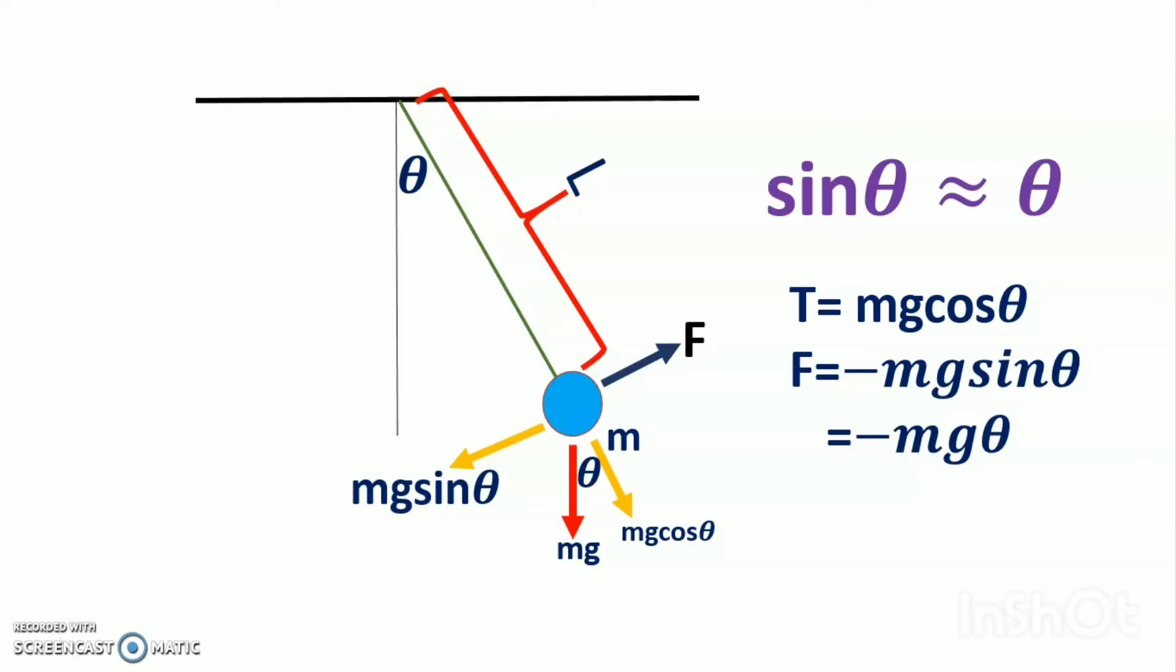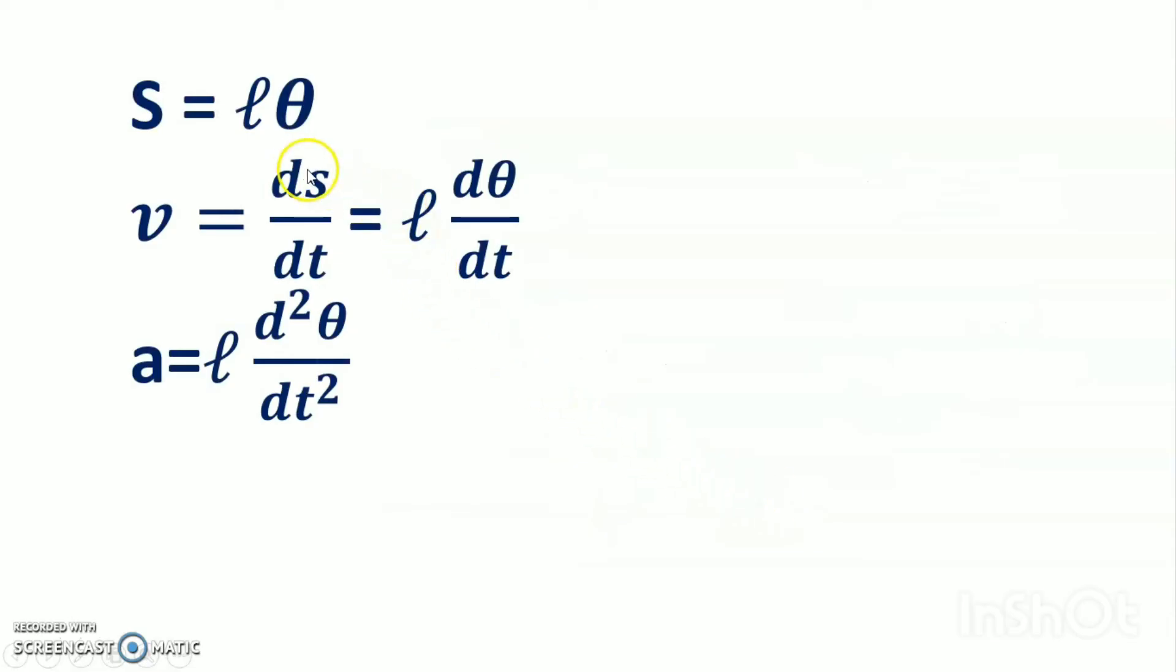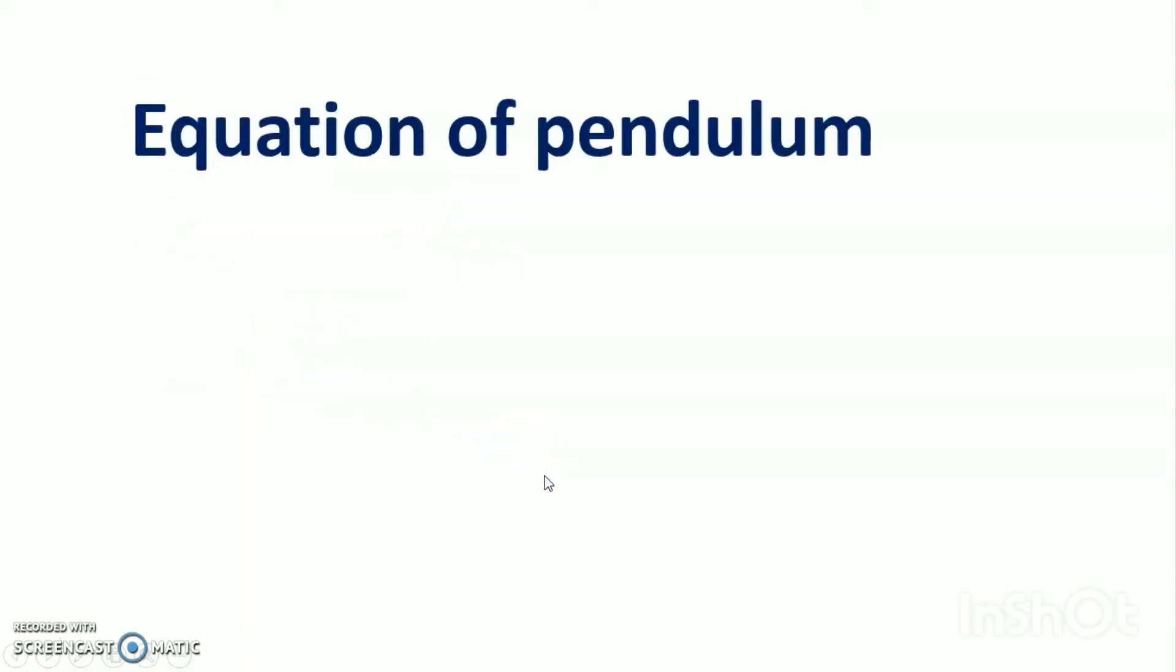You have already seen the total equation. The external force is mg θ, equivalent to mg θ. Now we will learn the equation: s = lθ, because we know this is the relationship between linear straight line. v = ds/dθ and a = l d²θ/dt².